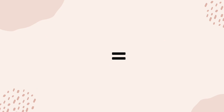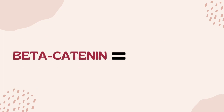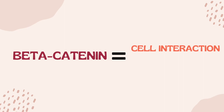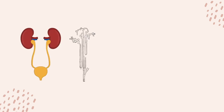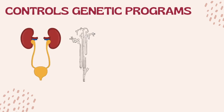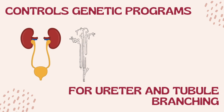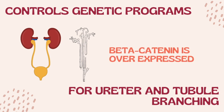Also, studies have shown that the overexpression of beta-catenin during the development of kidneys in a fetus can lead to kidney dysplasia. Beta-catenin plays a role in kidney development as it is involved in cell-to-cell interactions, signaling, and regulation of copying gene sequences. In normal development, beta-catenin controls genetic programs that are essential for the control of ureter and tubule branching in the kidneys. In human dysplastic kidneys, this molecule is overexpressed, leading to disorganized branching, suggesting a role in the development of kidney dysplasia.